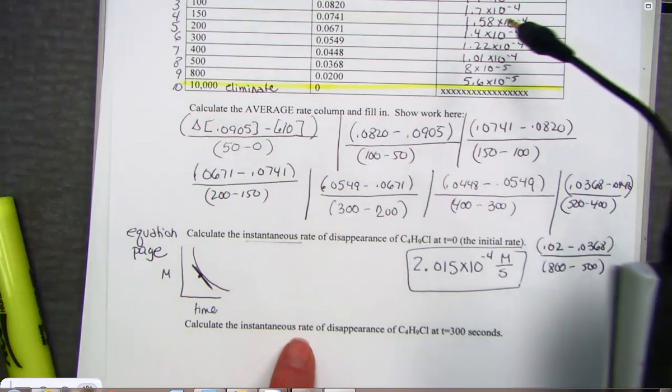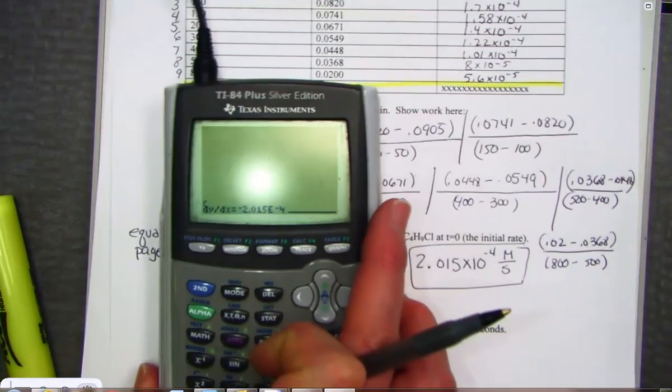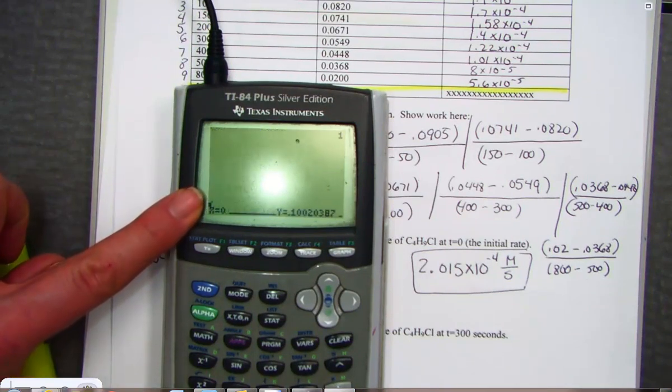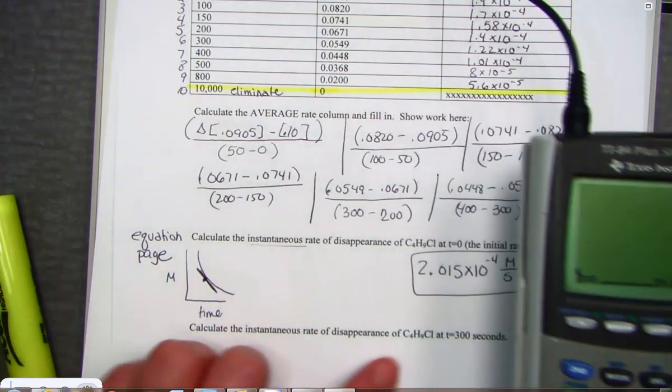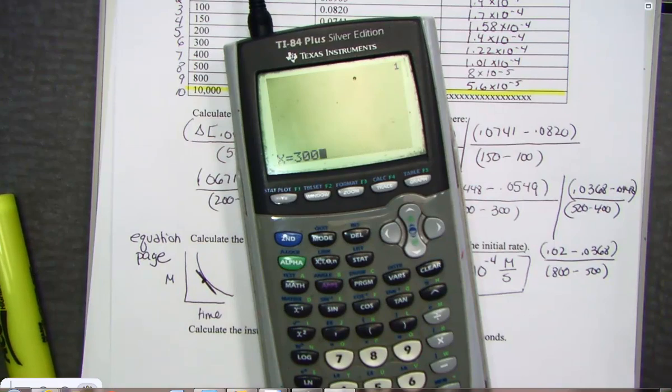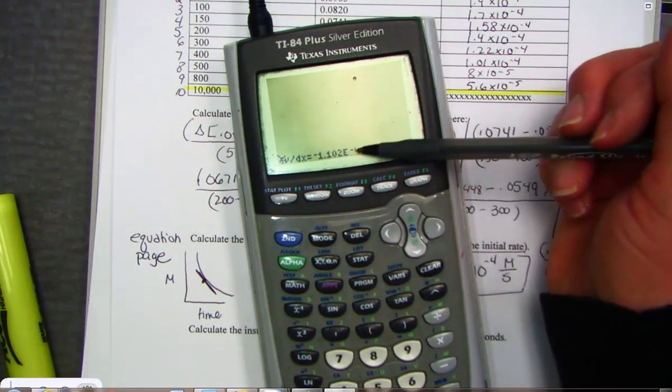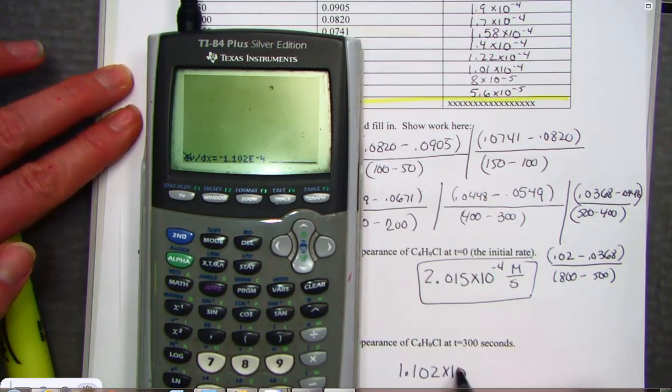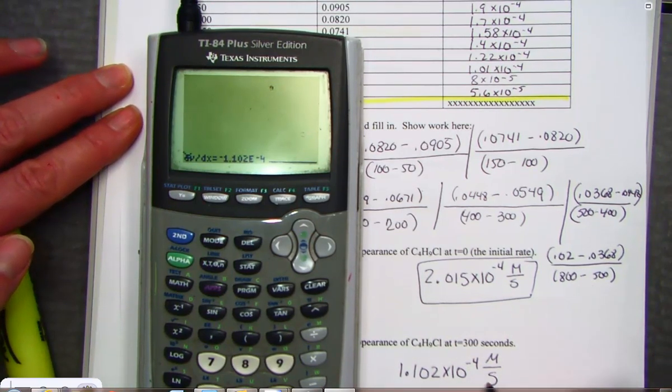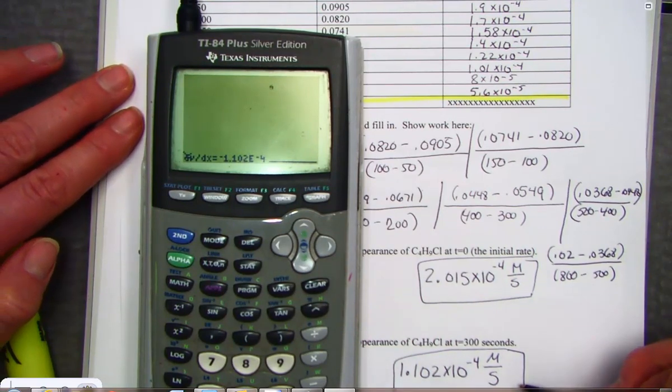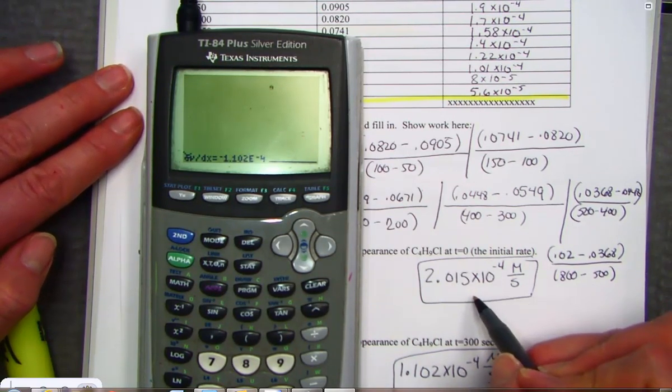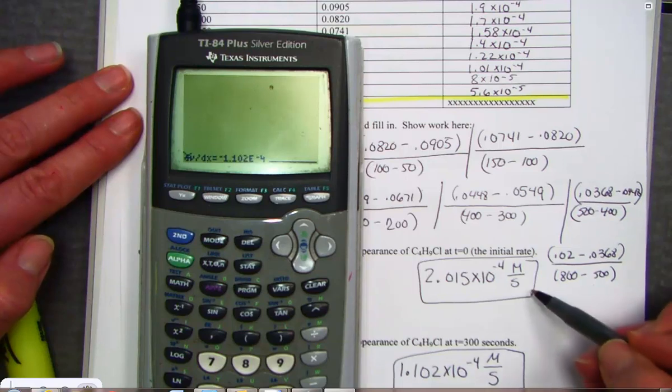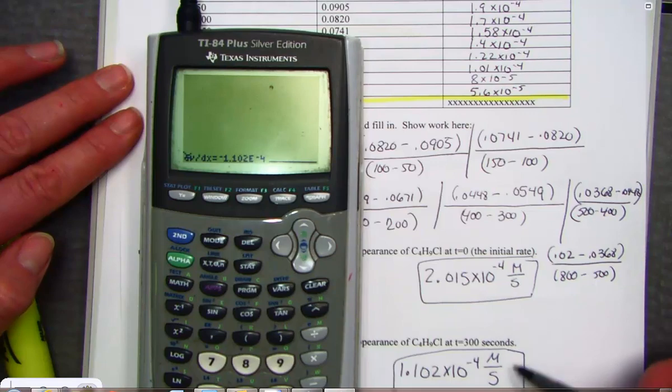Now we've done all the work already. So to calculate a next instantaneous rate, it's as easy as saying second calc. We want to calculate a derivative. So that's choice six. Dy over dx. And the number that I'm going to type in this time is 300 seconds. X equals 300. Equal. And here is my answer. Down here it's tiny but I can see it. Not a negative. 1.102 times 10 to the negative fourth molarity per second. As 300 seconds went by, the reaction slowed down. Reactions, of course, when the reactants are plentiful in concentration, they go much quicker. And as the reaction proceeds, they slow down. So here we've modeled how to calculate instantaneous rates using two examples. Getting familiar with the steps in your calculator. It just takes practice.